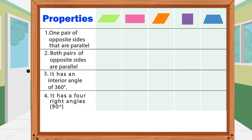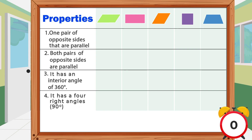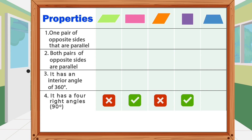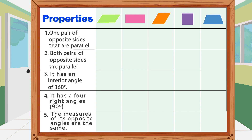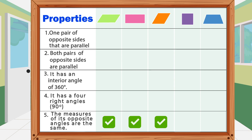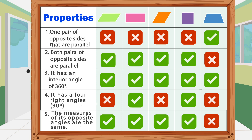Number 4: It has 4 right angles or 90 degrees — parallelogram, rectangle, rhombus, square, trapezoid. Number 5: The measures of its opposite angles are the same — parallelogram, rectangle, rhombus, square, trapezoid. How many correct answers did you get? Great job! Very good! Give yourself a round of applause!